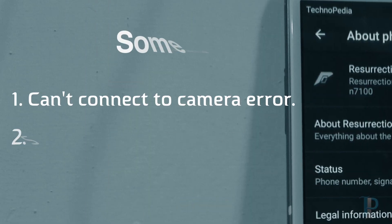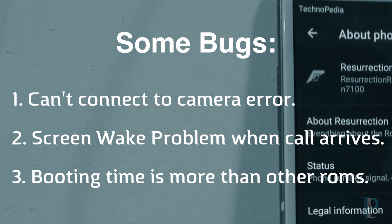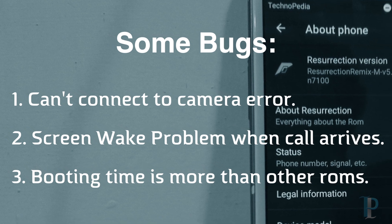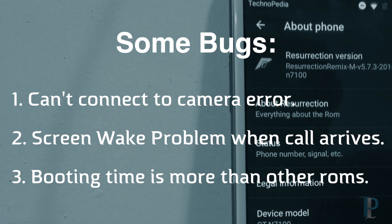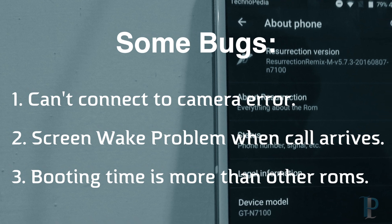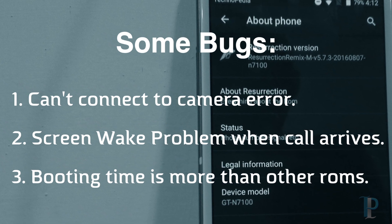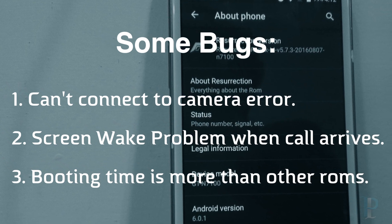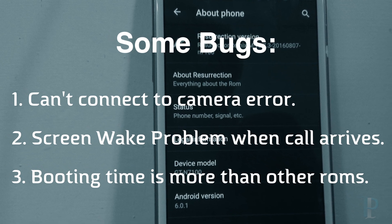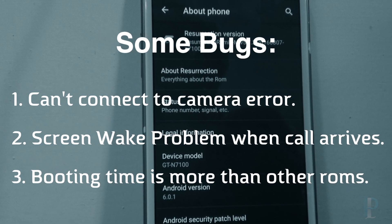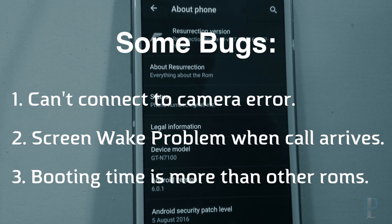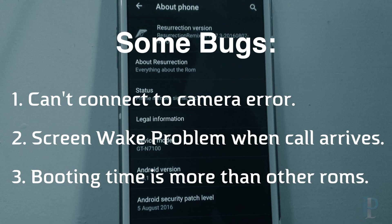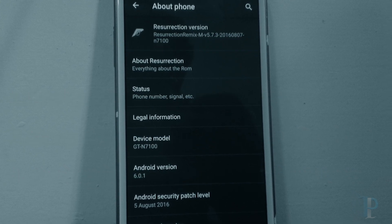Here are some of the bugs we noticed. The first bug is the camera error — sometimes the camera app gives an error that it cannot connect to the camera. The solution is to install an app called 'Camera Restarter' which will sort all the issues. The second bug is the screen wake problem — the screen doesn't wake when a call arrives sometimes, so you have to manually press the power button. The third issue is booting time — it's more than other ROMs. No major bugs are noticed till now.